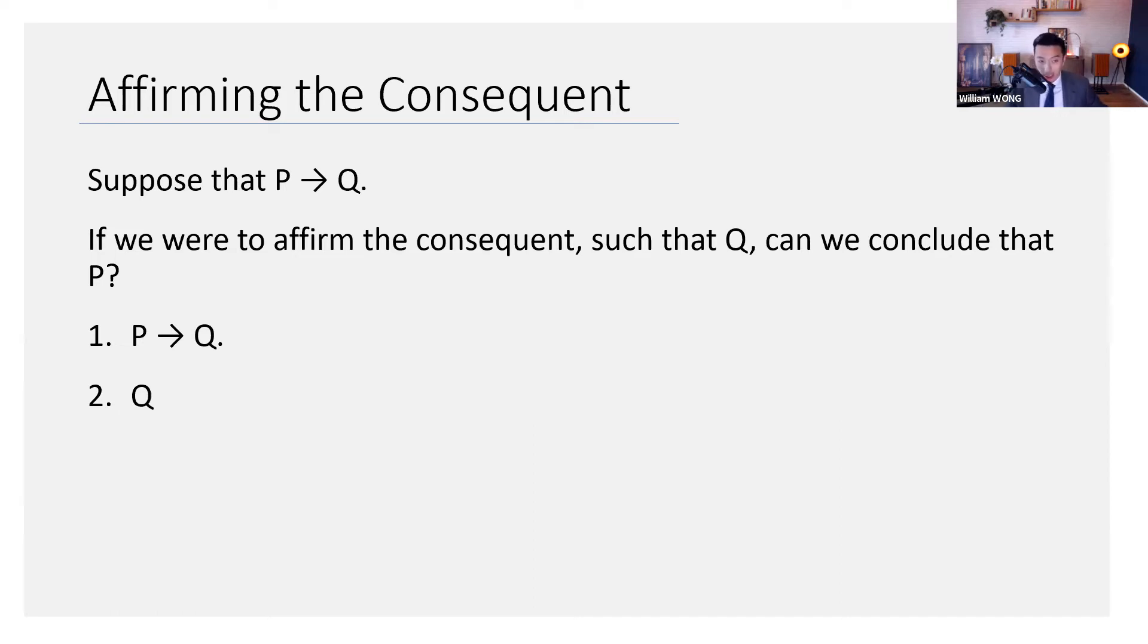Now, this is another common fallacy, and that's why it's been given a name. P entails Q, Q, therefore P. Does this work? Does this make sense?